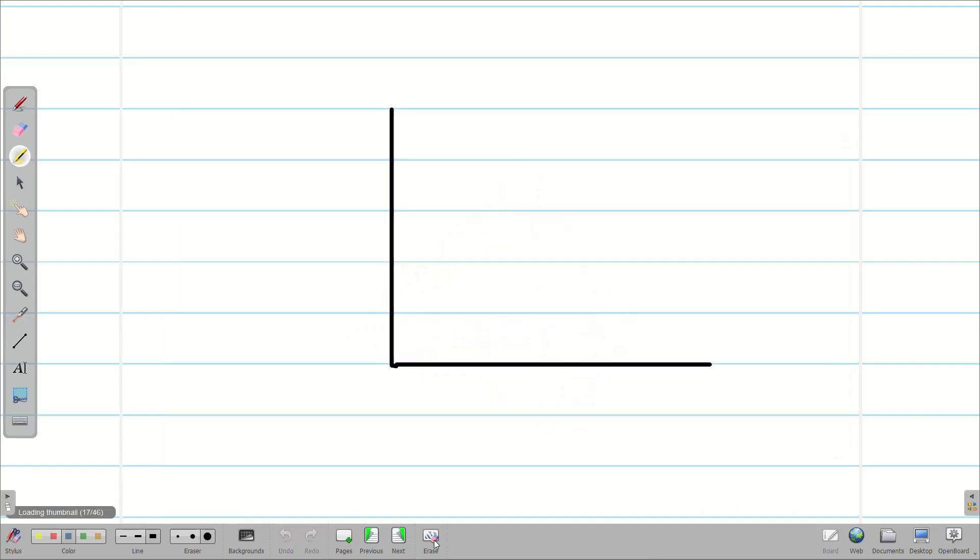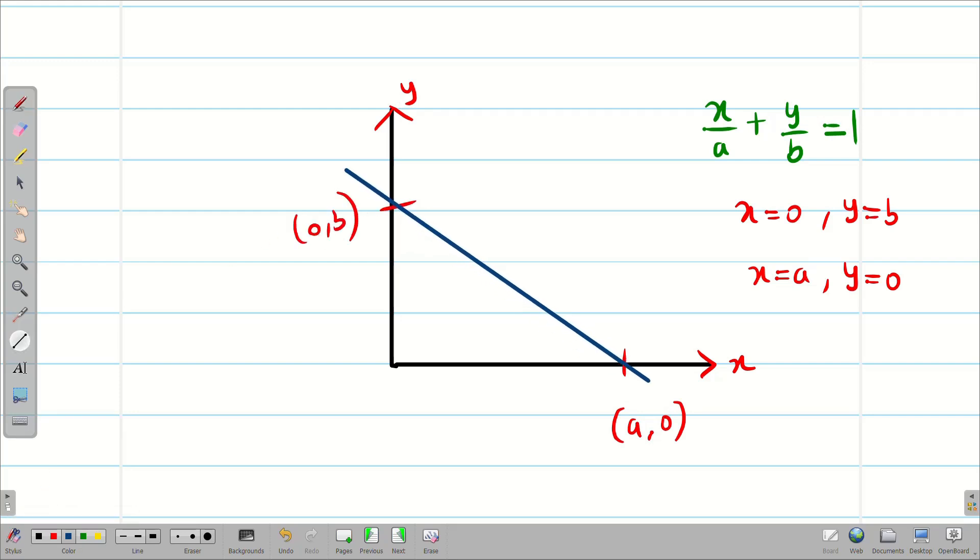Now, let us see mathematically. Do you remember in your school days, we used to draw this linear equation x by a plus y by b equal to 1. How to draw it? Just put x equal to 0, then we get y equal to b. Similarly, if I put y equal to 0, I get x equal to a. Therefore, in the xy axis, we mark these points as (a,0) and (0,b) and draw the straight line passing through these two points. This equation is known as intercept form.